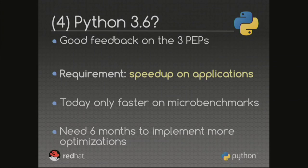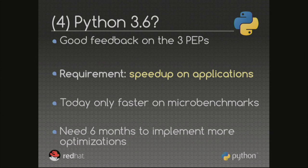As for whether this will land in Python 3.6 — I got good feedback on the three PEPs and the project in general. But the blocker is that people are asking me to show concrete speedup on real applications, not only on microbenchmarks. Honestly, today it's only faster on microbenchmarks because I spent a lot of time implementing guards, specialization, modifying the compiler, supporting AST optimization, and fixing bugs. I didn't have much time for amazing optimizations — this is more the foundation of the project. I need at least three more months to implement more optimizations visible on real applications.